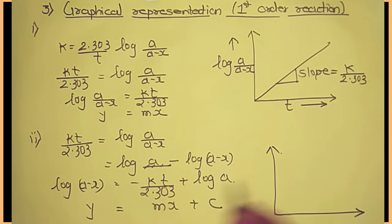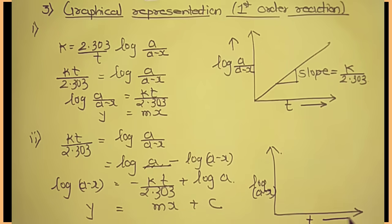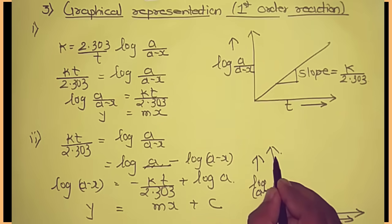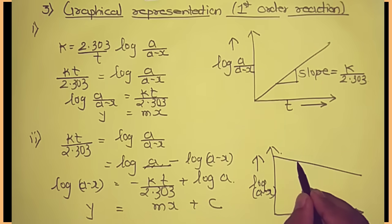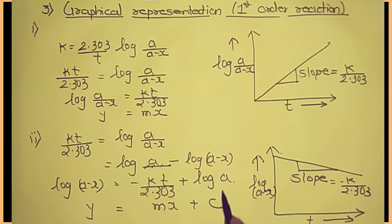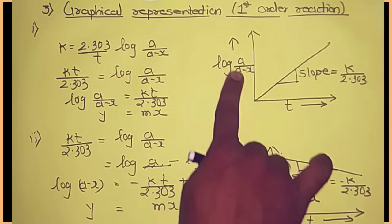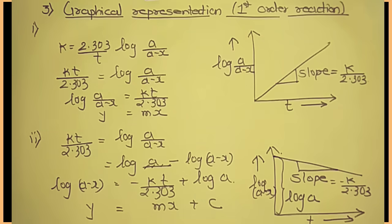This is a line which does not pass through origin. If we plot a graph of log of a minus x versus t, slope is negative, so the line slopes downward. The slope m equals minus k upon 2.303, and the intercept c on the y-axis is log a. So log of a minus x versus t is a straight line with negative slope, and log of a upon a minus x versus t is a straight line passing through origin.